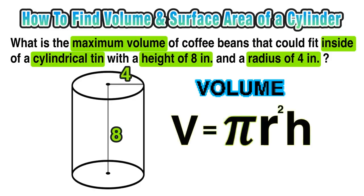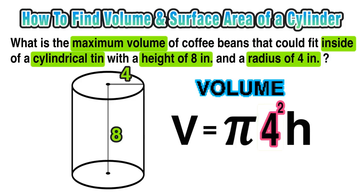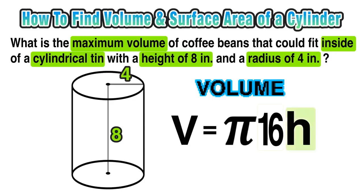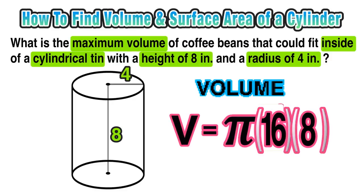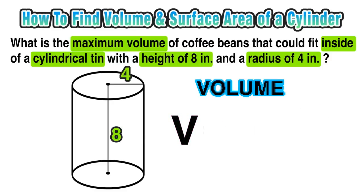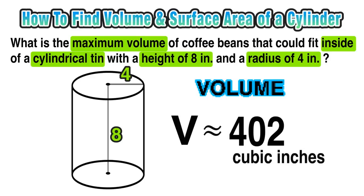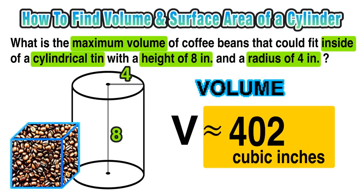Now we can use our volume formula: V equals pi r squared h. We replace r squared with 4 squared, since the radius is 4, and 4 squared is 16. Then we replace h with 8, since the height was 8 inches. Multiplying pi times 16 times 8, we get approximately 402 cubic inches. That means this can could hold approximately 402 of those little 1-inch cubes of coffee.